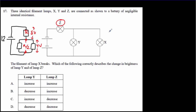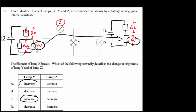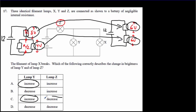If filament X breaks, our circuit simplifies to just resistor Z followed by resistor Y — two equal resistors. The 12 volts splits equally, giving 6 volts across each. So across lamp Y, the voltage went from 4 volts to 6 volts — it increased, so its brightness increases. For lamp Z, voltage went from 8 volts down to 6 volts — so it becomes less bright. The correct answer is C.